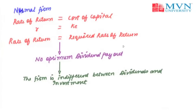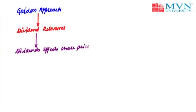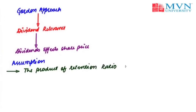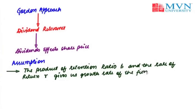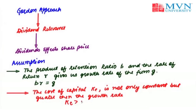Now let's start with another approach, which is the Gordon approach. Gordon has also supported the dividend relevance policy and believes in regular dividends affecting the share price of the firm. Gordon's assumptions are very similar to those given by Walter. However, there are two additional assumptions proposed by Gordon. The first is that the product of the retention ratio B and the rate of return R gives us the growth rate of the firm, denoted by G — that is, B × R = G. The second assumption is that the cost of capital Ke is not only constant but is greater than the growth rate G.